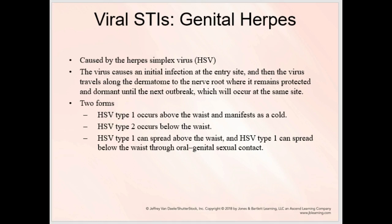So type 1 occurs above the waist and manifests as a cold sore. Type 2 is below the waist. You can transfer these — 1 can go to 2, and 2 can go to 1 through oral-genital sexual contact. Some patients don't understand that, so that is a good thing to know. If somebody has the herpes simplex virus, they should be aware that if they're having an outbreak, not to have oral sex for that reason.